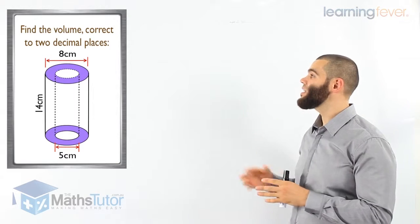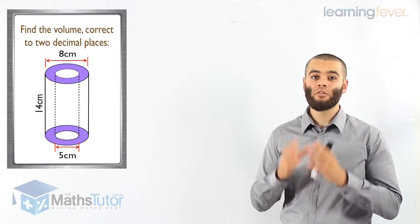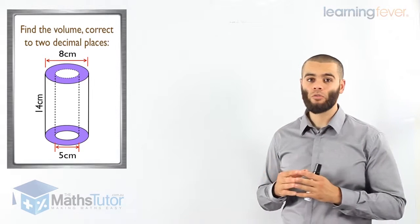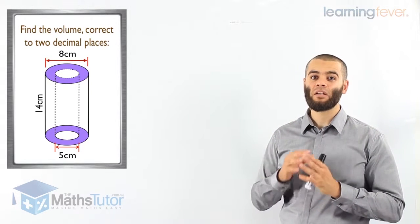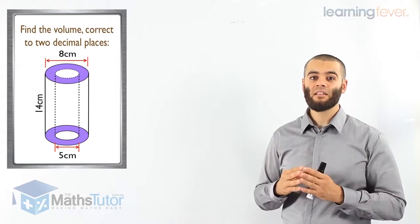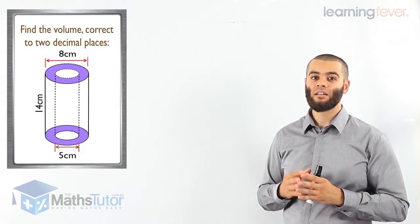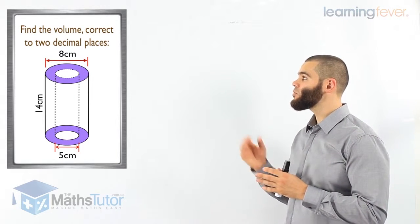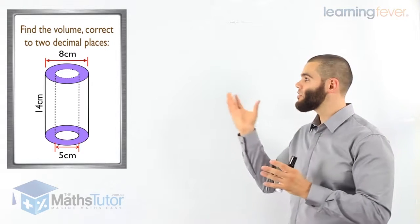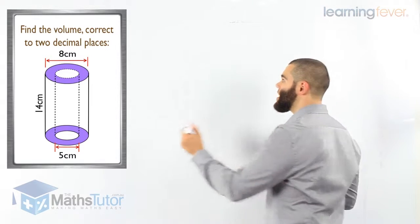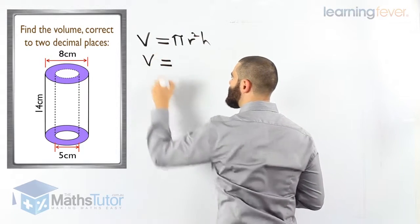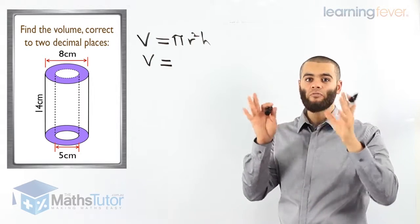Let's do one more example. We can see that we have a cylinder, but it has a hole in it — so it's like a pipe. The hole goes straight through the whole cylinder. We have a large cylinder with a small cylinder removed from the middle. So we work out the large cylinder, take away the small cylinder, and get the leftover volume. Starting with the formula V equals pi r squared h for the large cylinder.